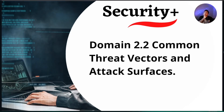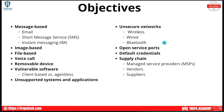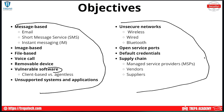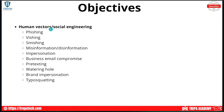We're going over domain 2.2: common threat vectors and attack surfaces. We're going to break this up into three different videos. First we'll talk about message-based, image-based, file-based, voice call-based, and removable device vectors. Then we'll go into vulnerable software — how software can be malicious and used to download malicious payloads. We'll cap this subdomain off by covering human vectors and social engineering.